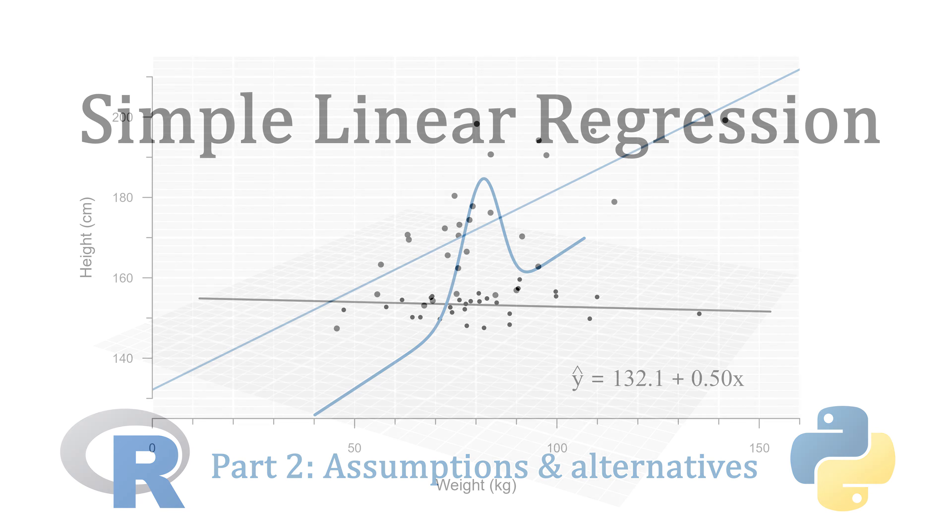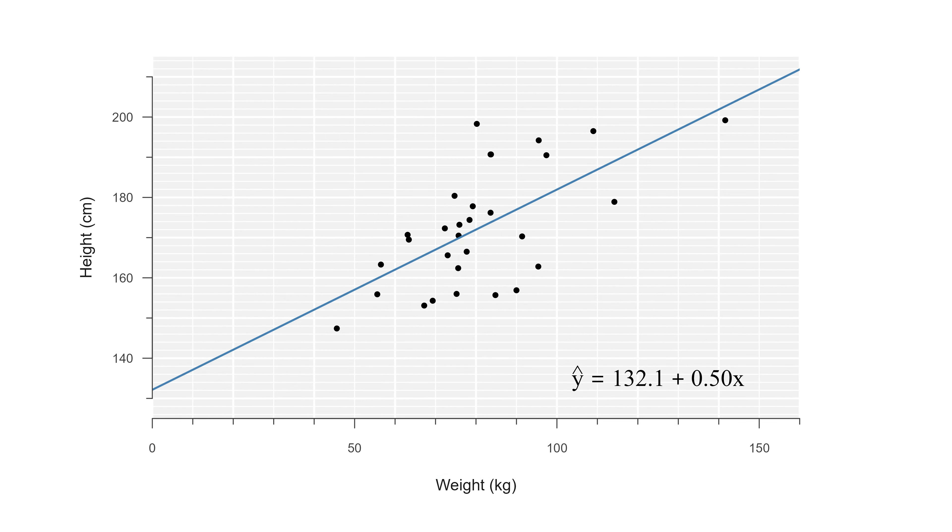In the first video we introduced the simple linear model, which for any value of the explanatory variable can predict the value of the outcome. This prediction equals an intercept plus a slope multiplied by the value of the explanatory variable. We also saw that this prediction is not exactly equal to the outcome, it is just an average relationship. So there is actually something that remains behind, called the residual.